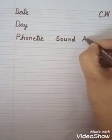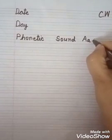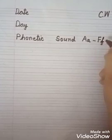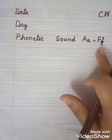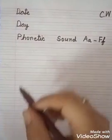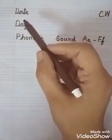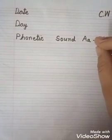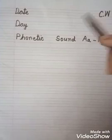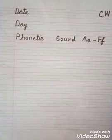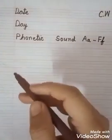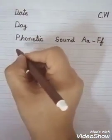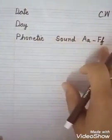A — capital, then small. Make a slipping line, write down F. A to F. Have you written phonetic sound A to F? Very good.